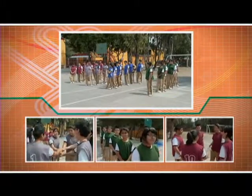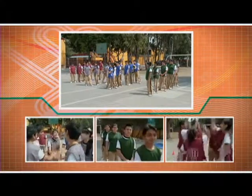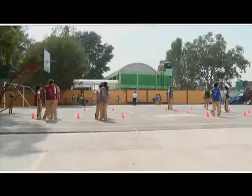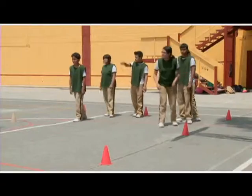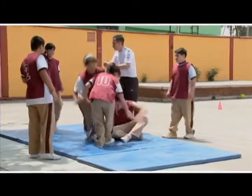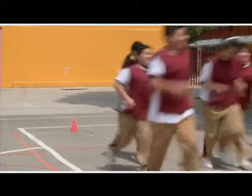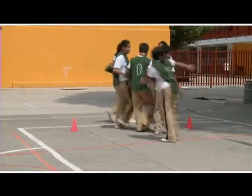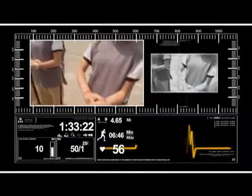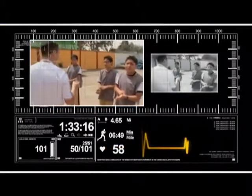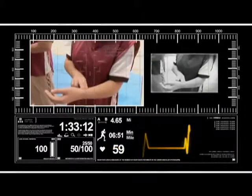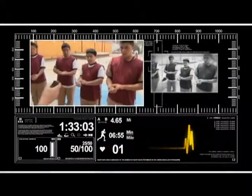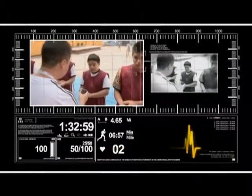Para participar en este circuito, nuestros amigos han conformado 4 equipos mixtos de 6 integrantes cada uno. Cada equipo se ubica en una estación y durante 6 minutos desarrolla el juego asignado. Posteriormente, a trote lento, se desplazan hacia la siguiente estación para participar en otro juego. Dado que en este circuito, ante el esfuerzo físico que se realiza, la frecuencia cardíaca y la respiratoria sufren cambios, es recomendable registrarlas al inicio y al final de cada juego.